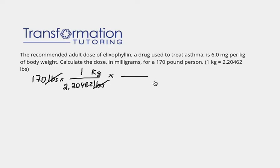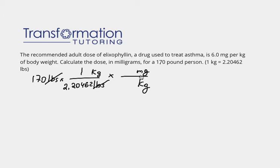Now, if we don't want kilograms — they're asking us for milligrams — we have another ratio: 6 milligrams per kilogram. So if we want to get rid of kilograms, we use the ratio of 6 milligrams per kilogram: kilograms go in the denominator, and we get milligrams.